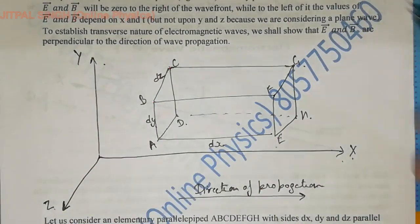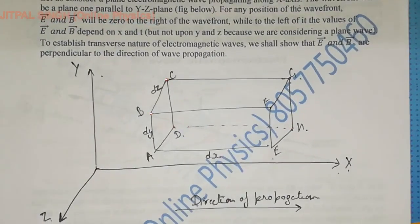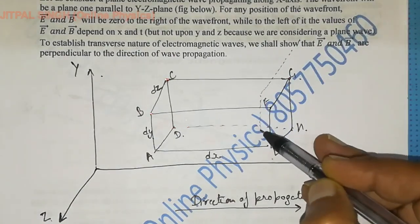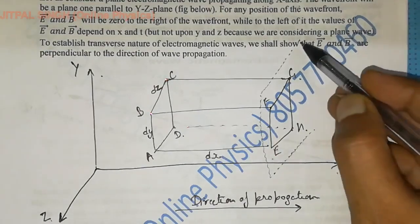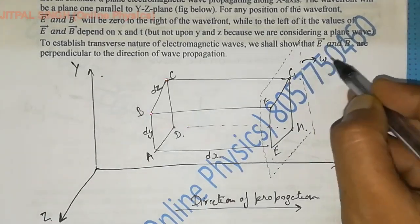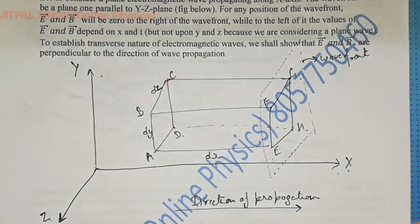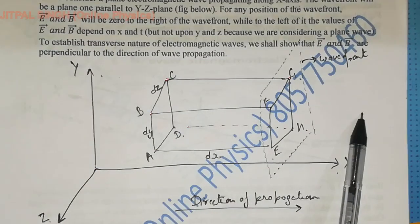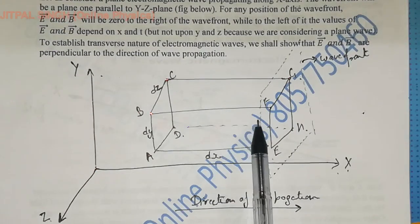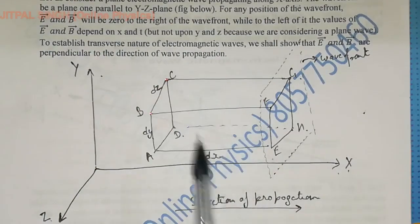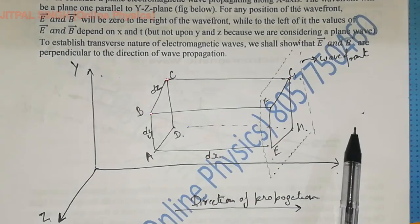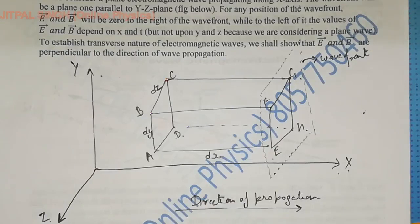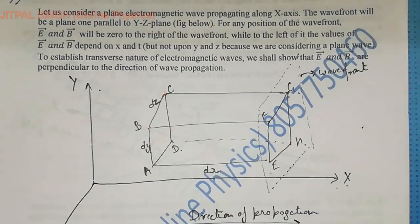Wave is propagating along the x-axis, and I'm drawing a plane wave front — check this dotted rectangle, it represents a plane wave front. To the right of this wave front, electric and magnetic fields will be zero because the wave is still at position EFGH and not ahead. To the left of it, the values of E and B depend upon x and t, because we are imagining the wave moving along the x-axis and not along y and z.